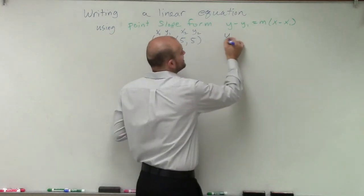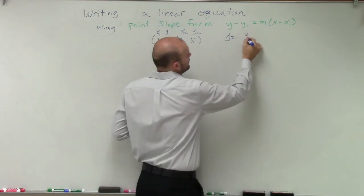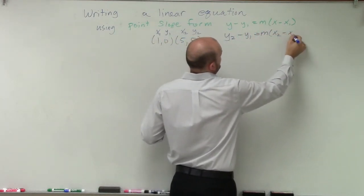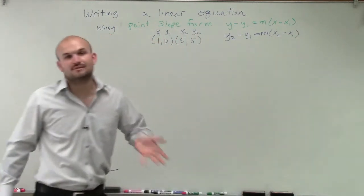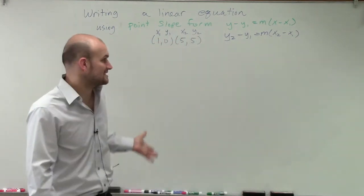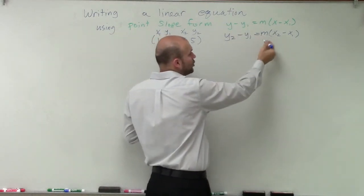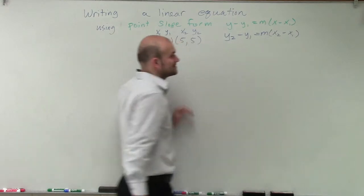So sometimes what I like to do is rewrite this equation like this. Now notice, all I'm doing is I'm just changing how we're labeling the x and the y. It's still y-coordinate minus y-coordinate equals the slope times x-coordinate minus the other x-coordinate.